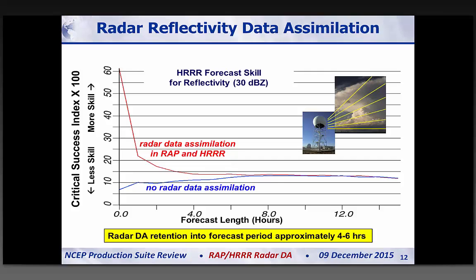There's a pretty significant pickup in skill that projects approximately four to six hours into the forecast period. This is a relatively short-term retention of the information, but this is where we want the most impact — in those first four to six hours after radar data assimilation. It's impacting the short-term timescales, and then larger-scale forcing and information dominates on the mesoscale after that.